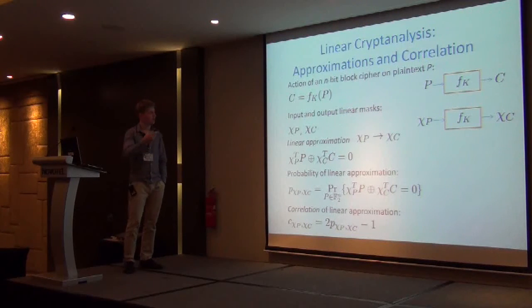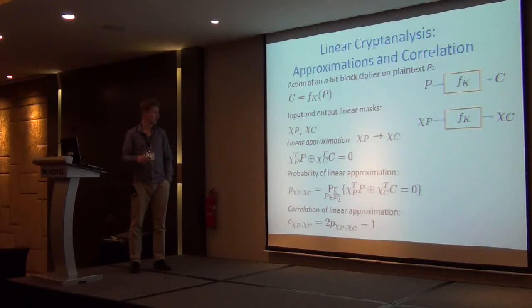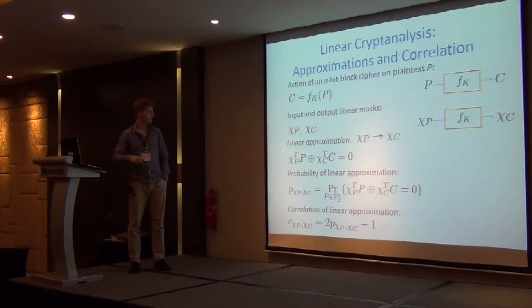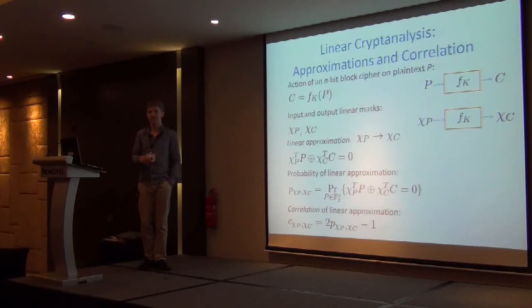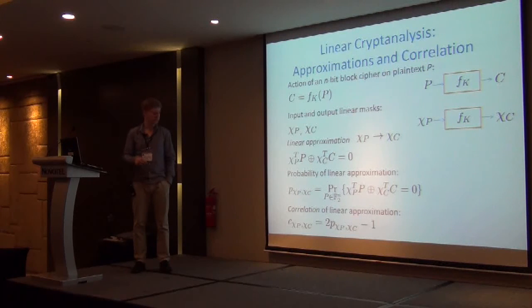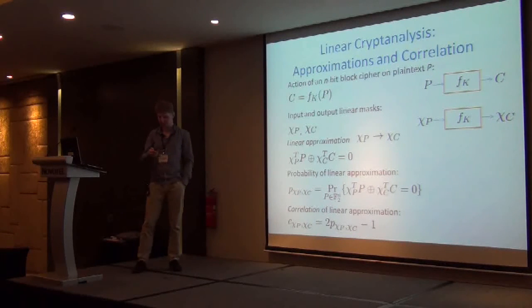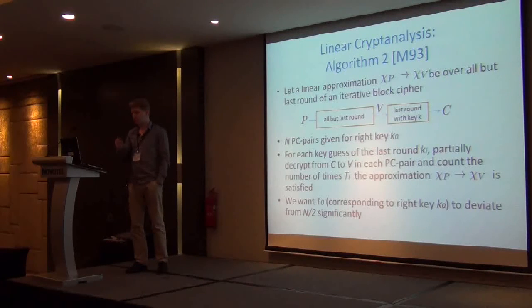So I will start with a very brief overview of what linear cryptanalysis is about just to fix some notations. We have some key function with some plaintext and ciphertext and we have masks on the inputs and outputs of this function. Then we have linear approximation and we can compute the probability of this linear approximation. Usually we are dealing with something like bias or correlation values, which is basically two times the probability for the linear approximation to hold minus one. So up to a factor of two, it's also what is called bias.